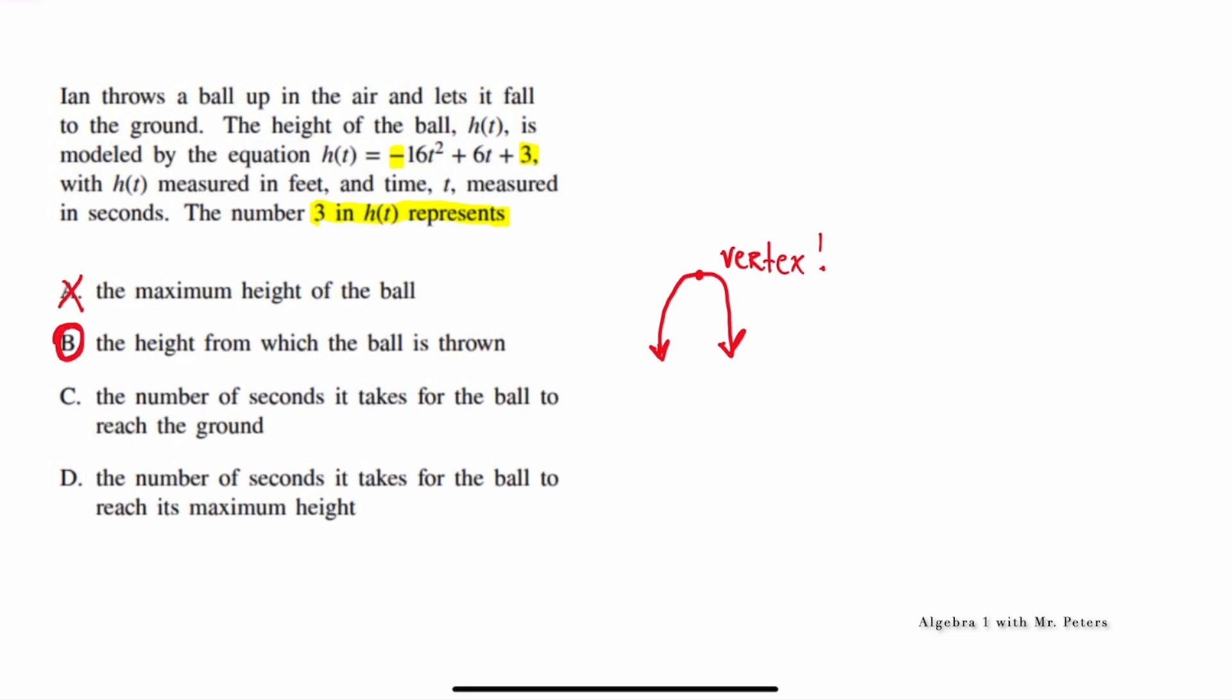But before we go, let's break down C and D. So C says the number of seconds it takes for the ball to reach the ground. Well, that will be represented by the x-axis and when the parabola crosses the x-axis. So we're specifically talking about this point right here that you see me making on my screen when the ball comes back down to the ground. So we know that this is not the correct answer. Then answer choice D, it says the number of seconds it takes for the ball to reach its maximum height. So that is related to the vertex. So when it reaches its maximum height, which is the x-coordinate. So if the x-coordinate was something like 3, we would say that it reached its maximum height of 15 feet at three seconds. So this is how you kind of break down a function and find different answers based on the problem that they ask you, family.